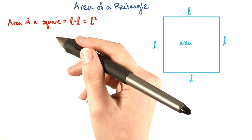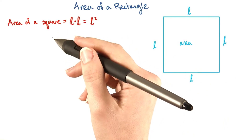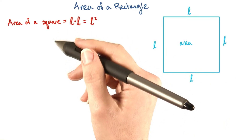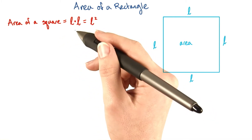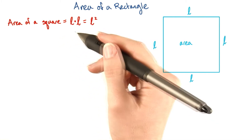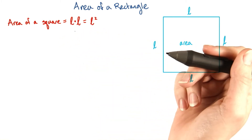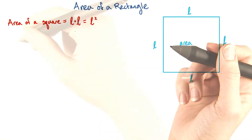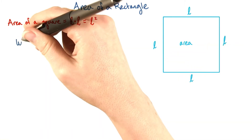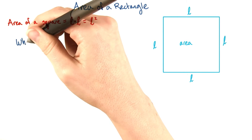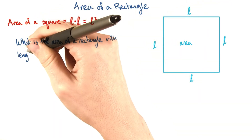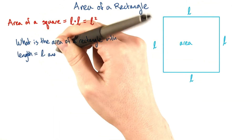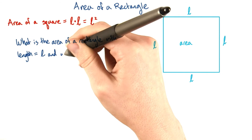This formula should be recorded in your notebook. We know that the area of a square is L times L. What about the area of a rectangle? What is the area of a rectangle with length equals L and width equals W?